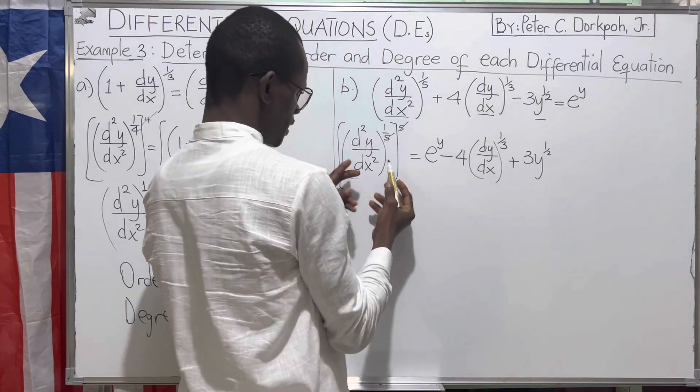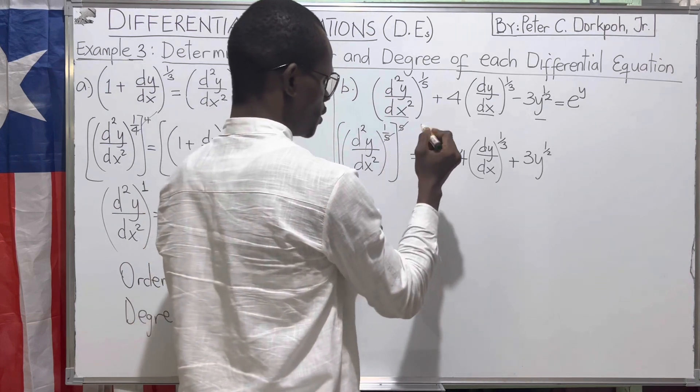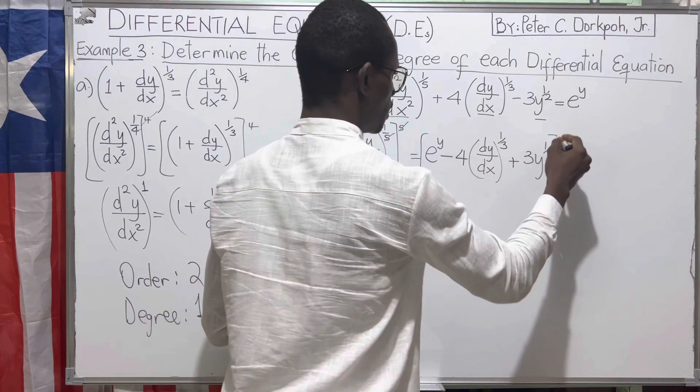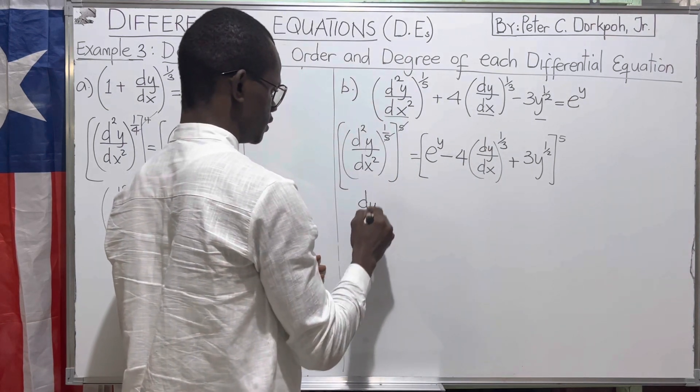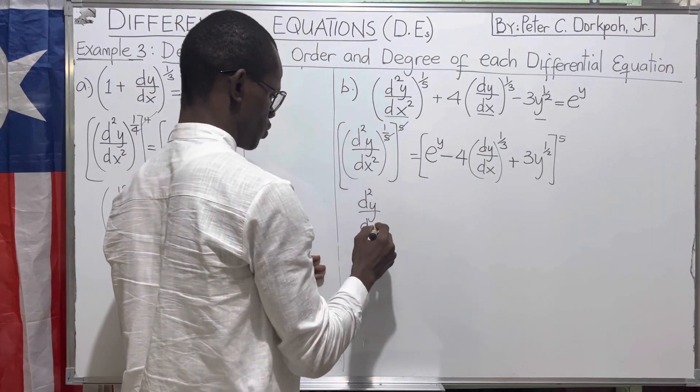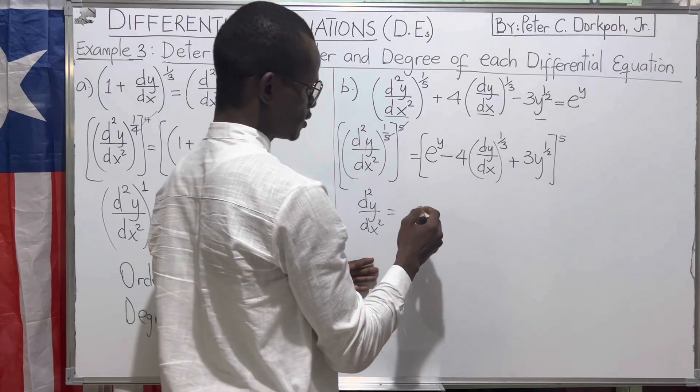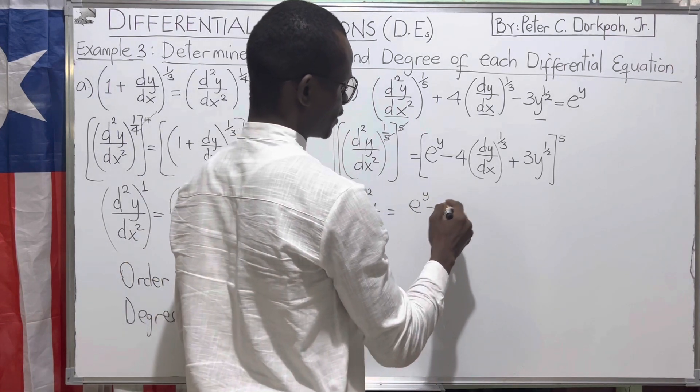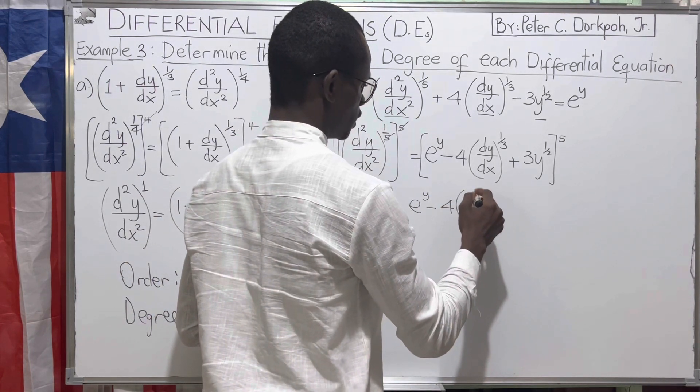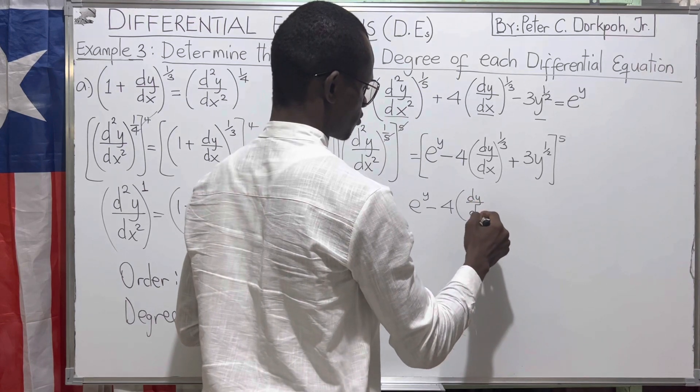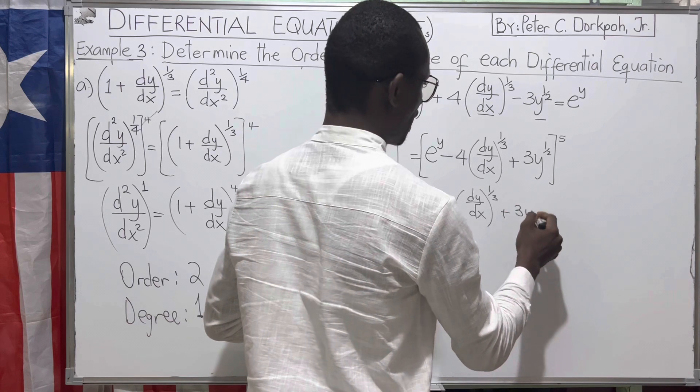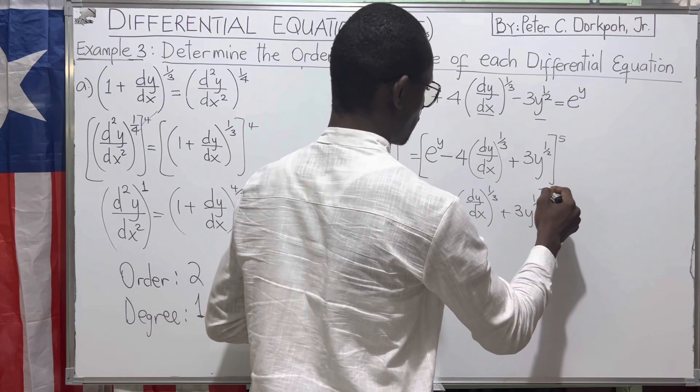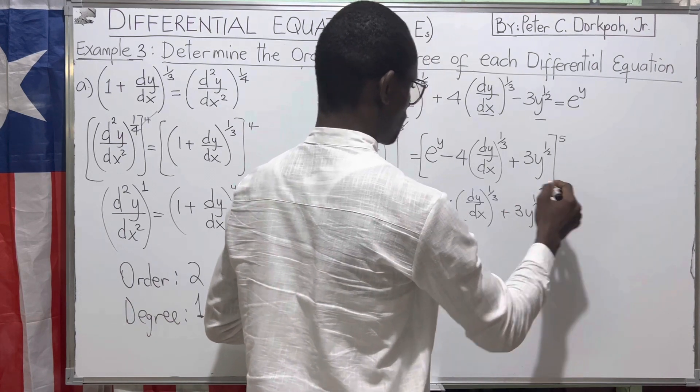Since we raise this side to five, we can also raise this side to five. Therefore, we have d²y/dx² equals e raised to y minus four, dy/dx raised to the power one over three plus 3y raised to the power half, all raised to the fifth power.